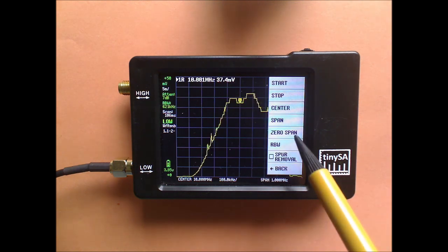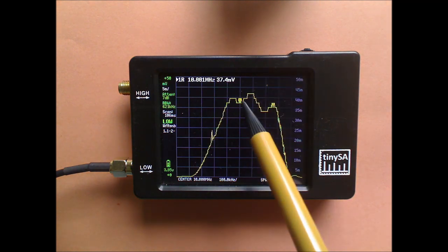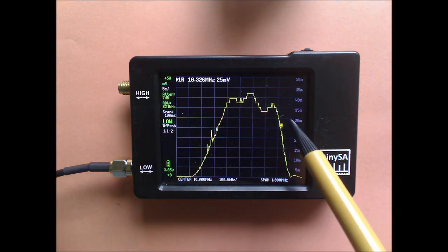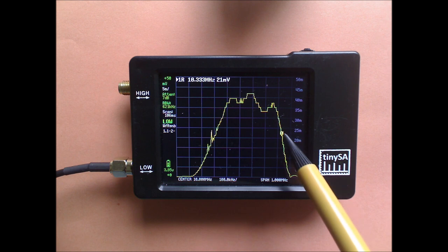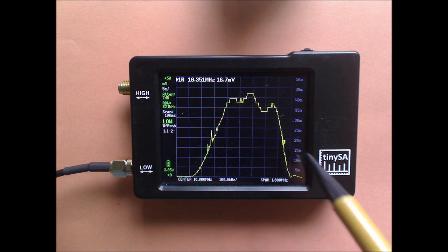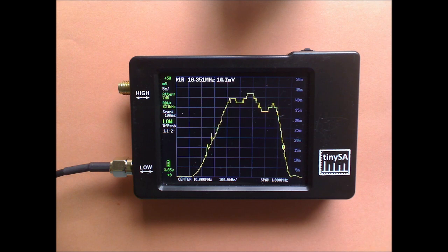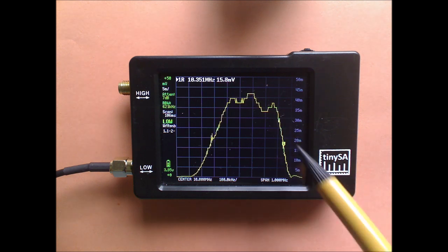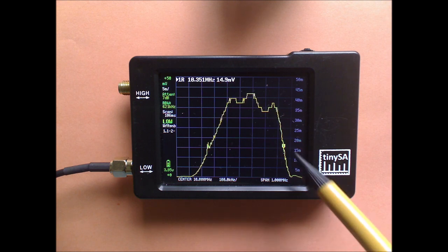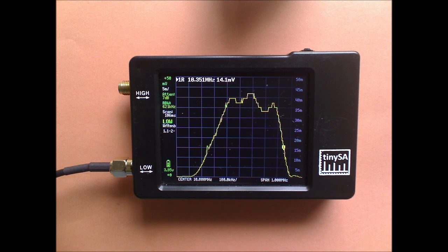But if I now move the marker to 10.35 MHz, you see it's on this steep skirt of the resolution filter, which is almost linear. And that will nicely demodulate any change in frequency and translate it to an amplitude modulation.